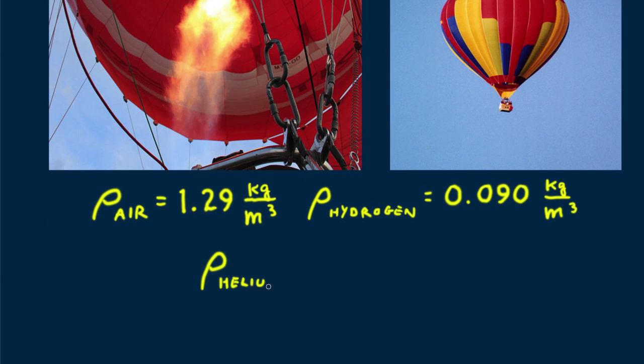The densities listed here are at sea level and zero degrees Celsius. Clearly, hydrogen is the least dense, but because it's flammable, it's seldom used. Helium is the gas of choice.